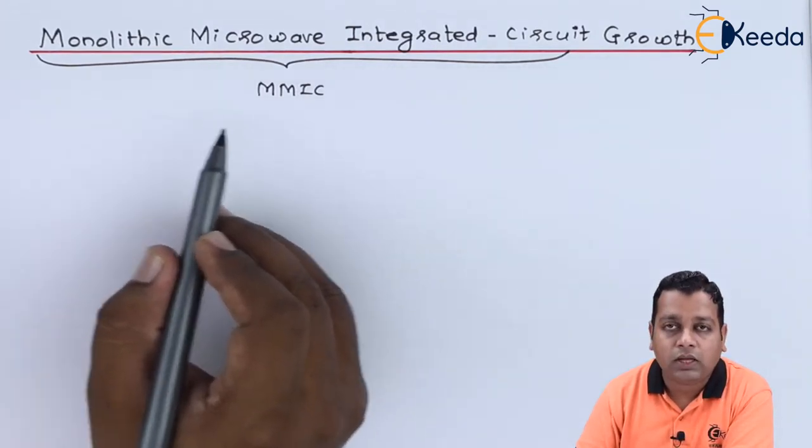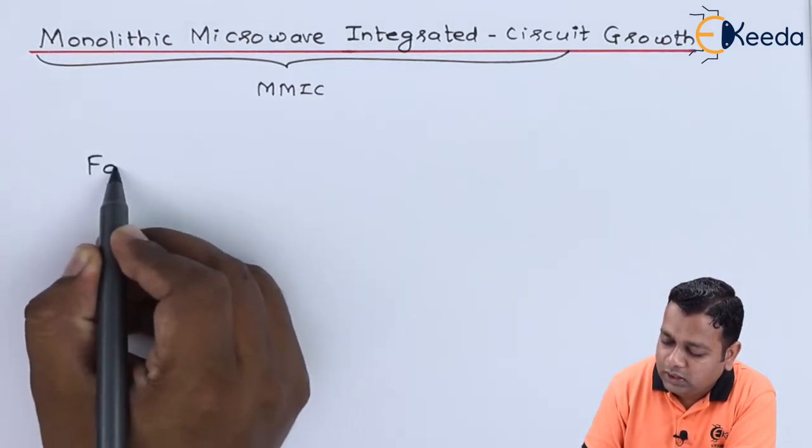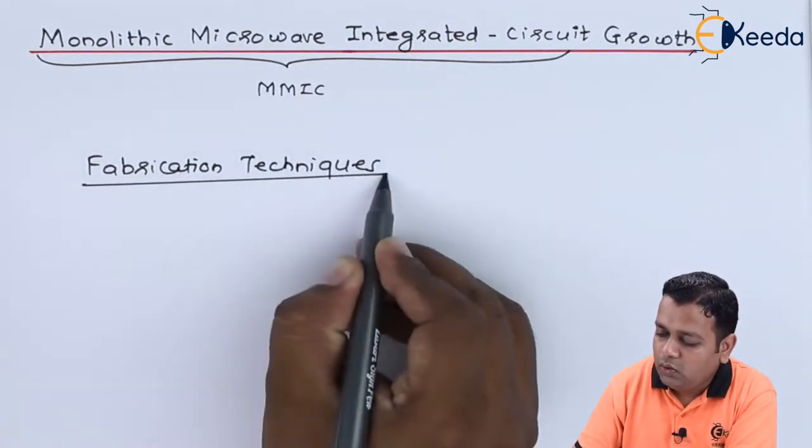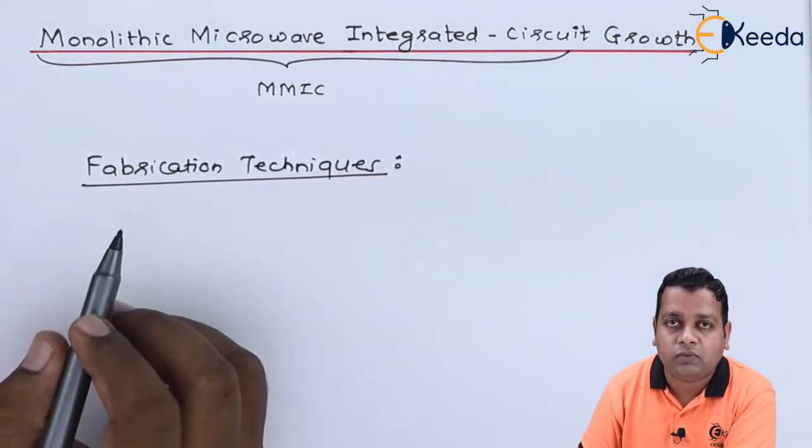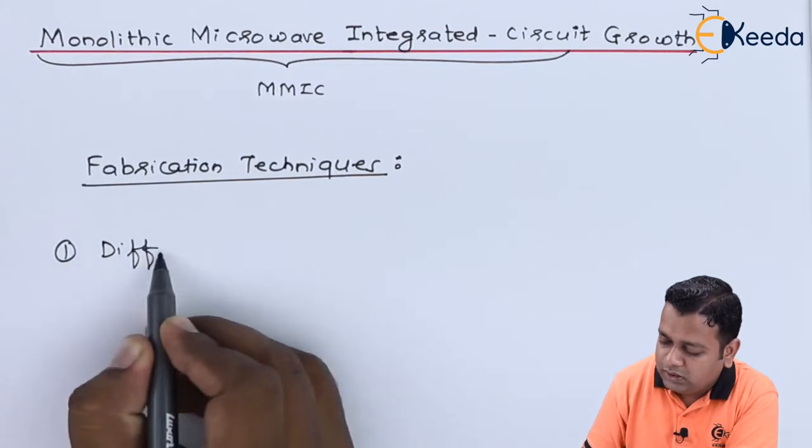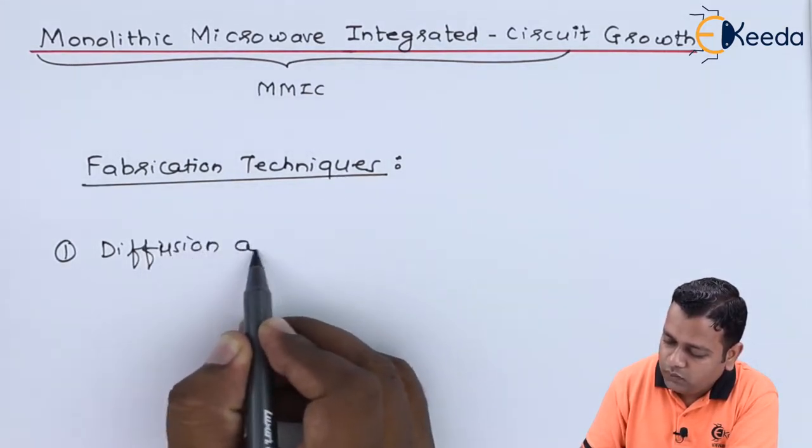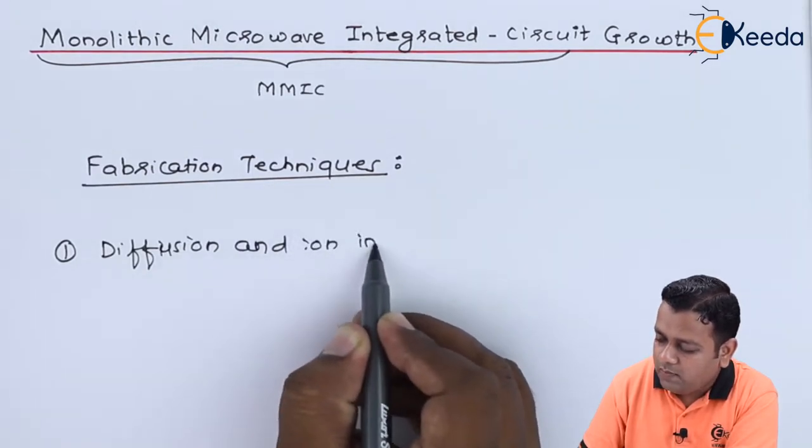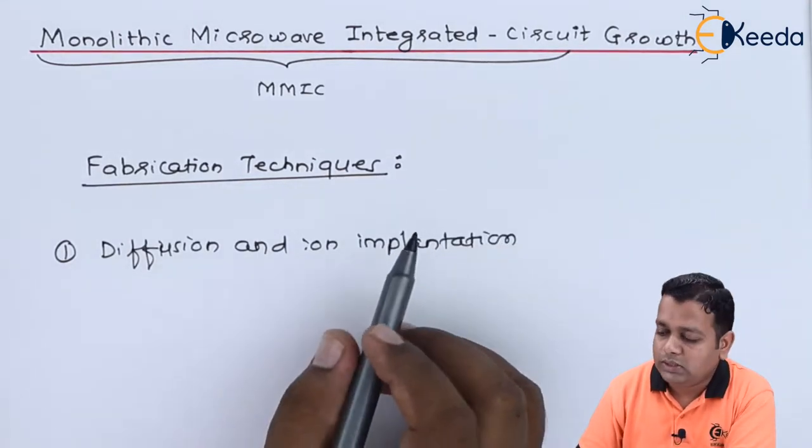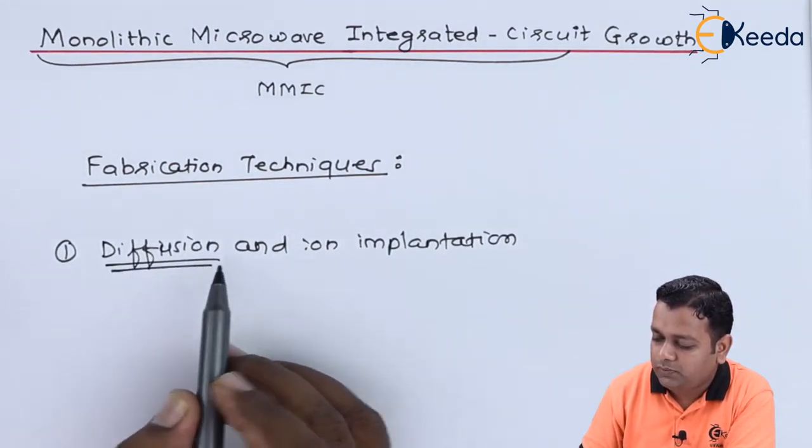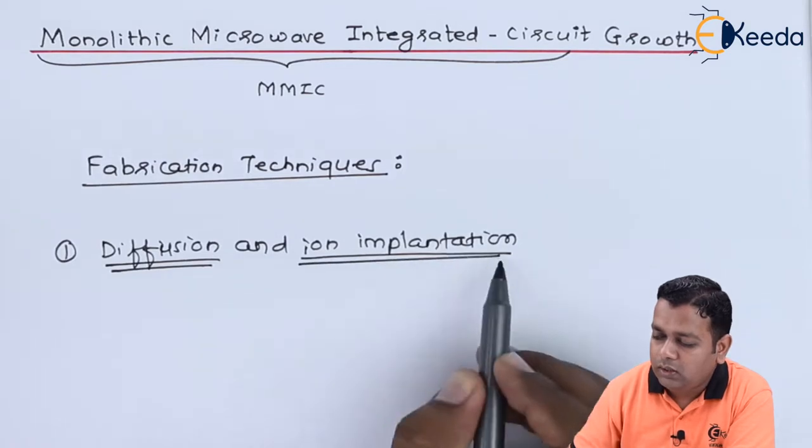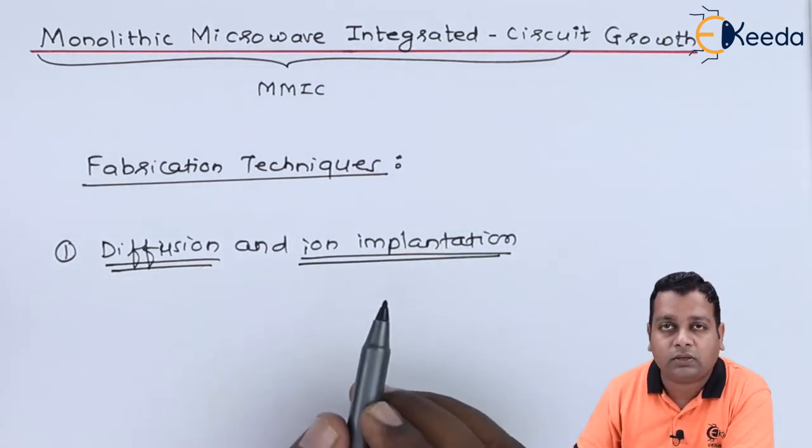Now here for the MMIC we shall be reporting the fabrication techniques. In the several fabrication techniques available, a few of the popular ones we shall be talking about. The very first one is called diffusion and ion implantation. So these are the two processes. The first process is called diffusion and the second process is called ion implantation. They are working for controlling the amount of the dopants to be into the semiconductor substrates. So these are made possible to have the fabrication of MMIC.